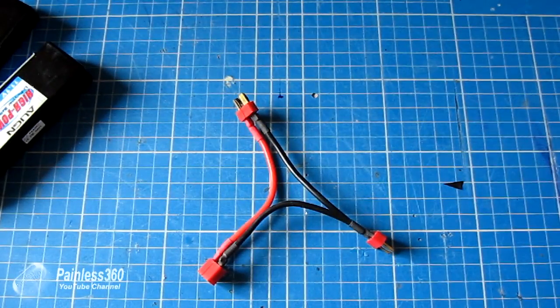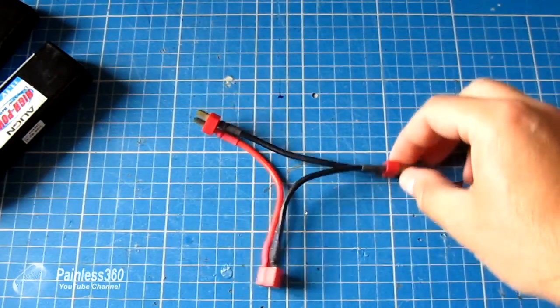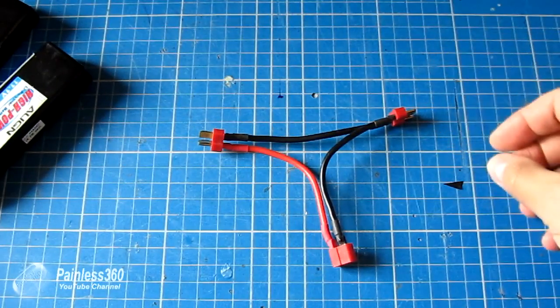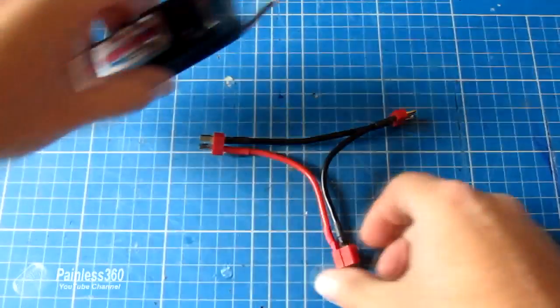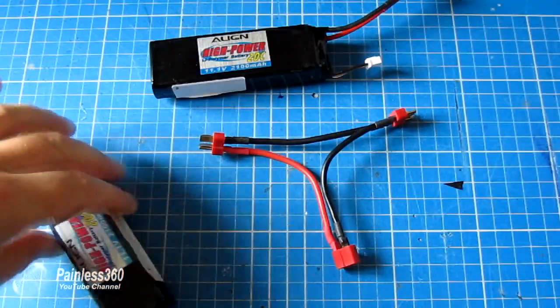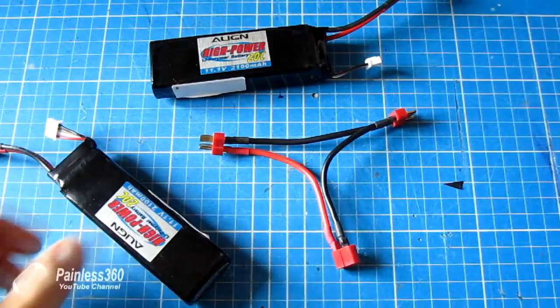One of my subscribers has asked about connecting batteries in parallel and series, and the effect that has on things like voltage and current. The voltage tends to be easier to understand, but I thought I'd put together a little video to explain the current.